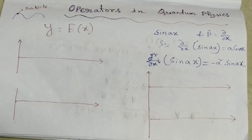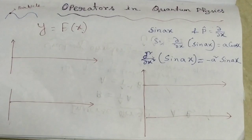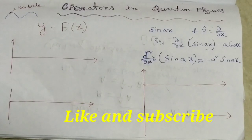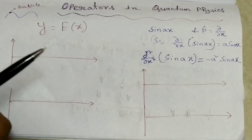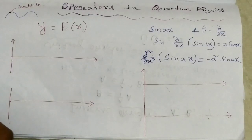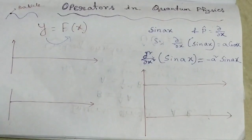In a wave function, if we measure position and momentum, we use an operator. An operator is used for measurement purposes. By definition, an operator is a symbol for a certain mathematical operation which turns one function into another function, but in some situations the function remains invariant. So an operator is a mathematical operation on the wave function that produces another wave function.